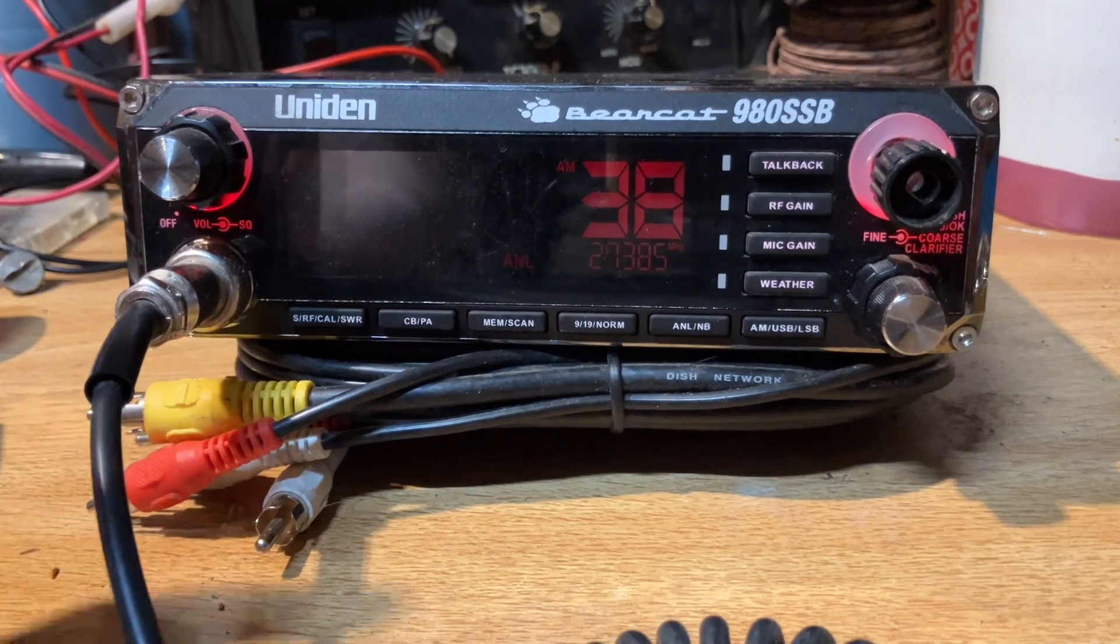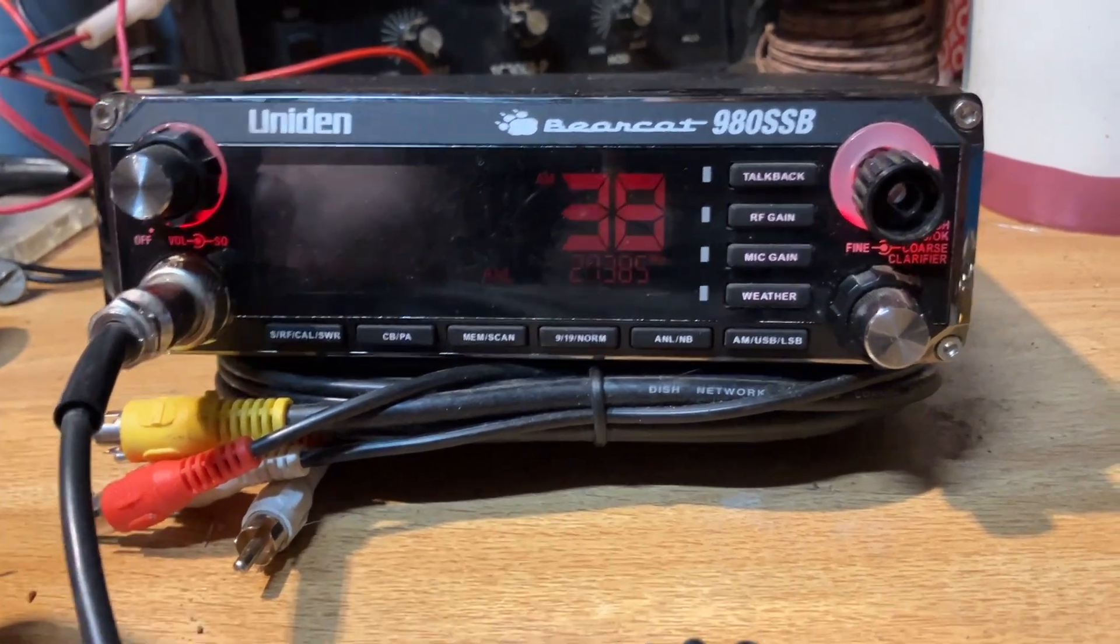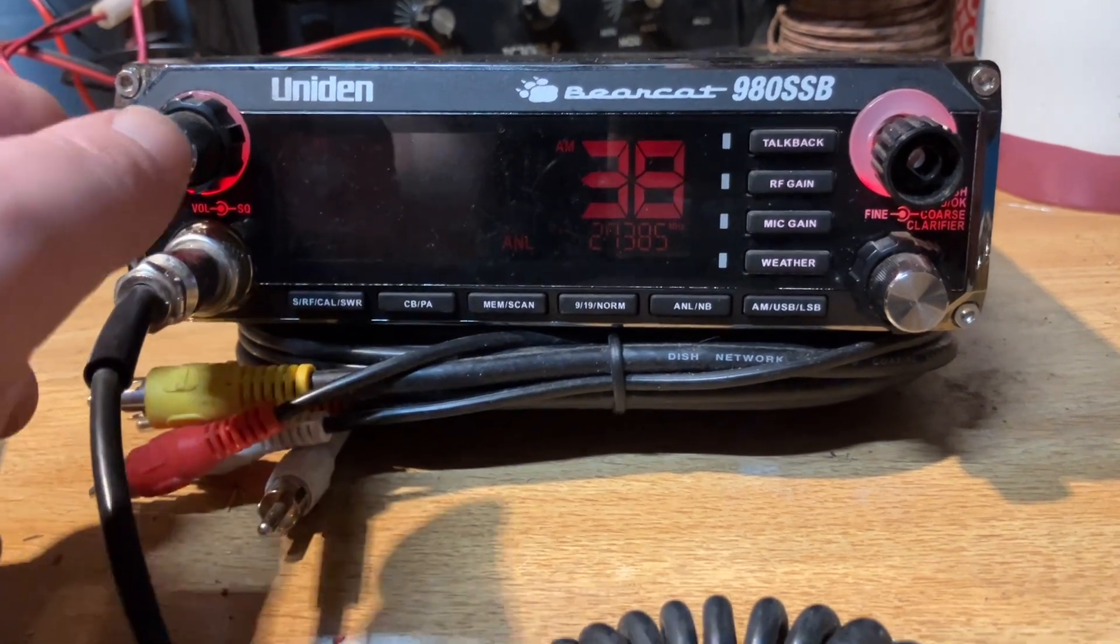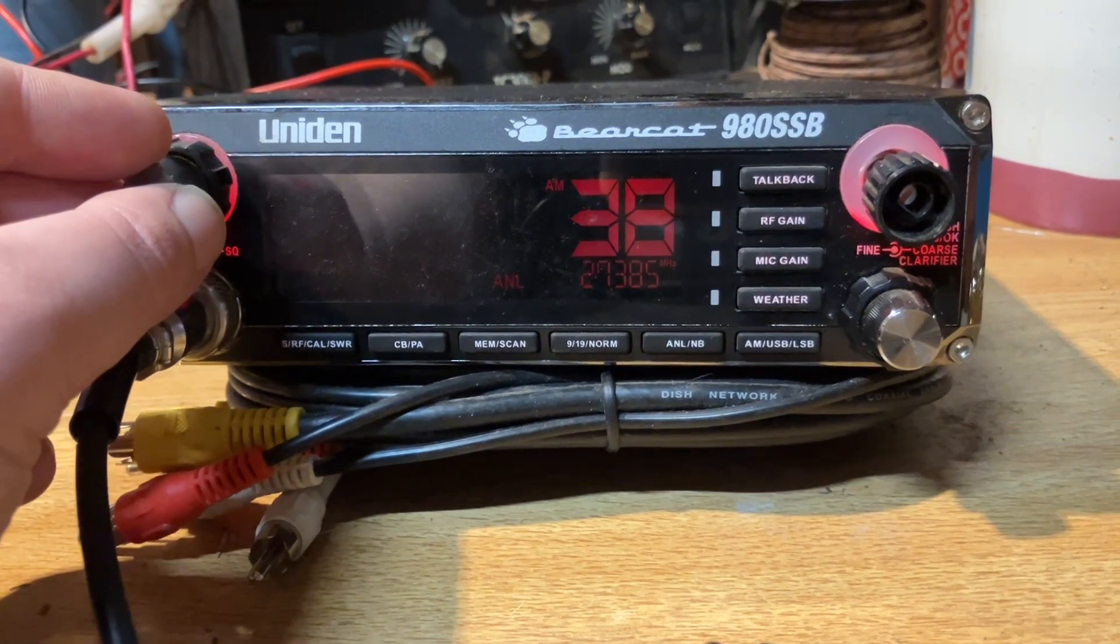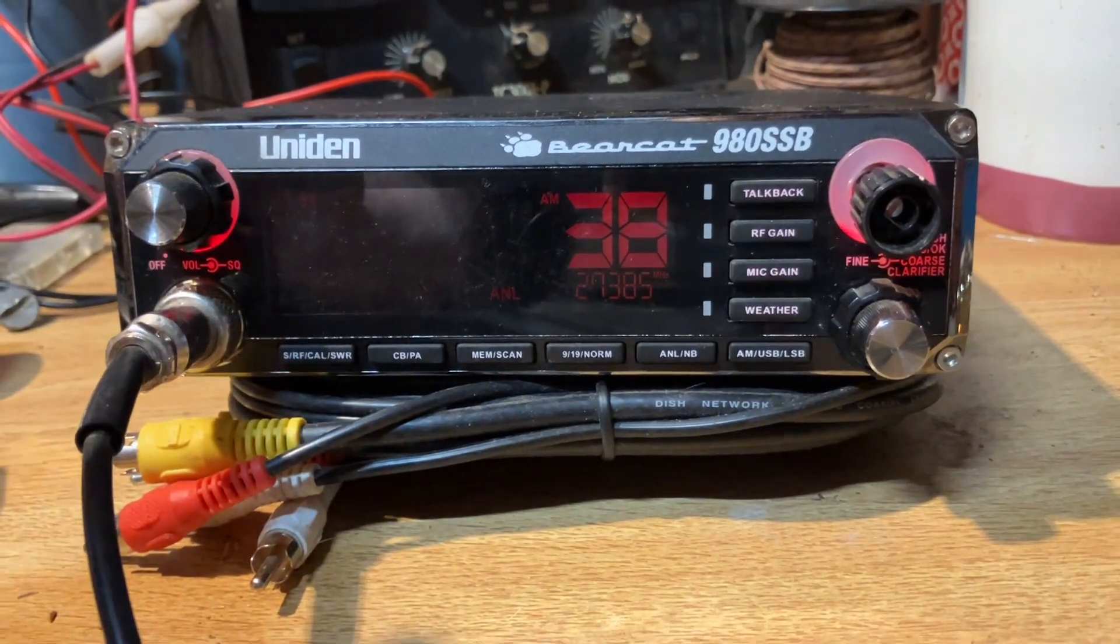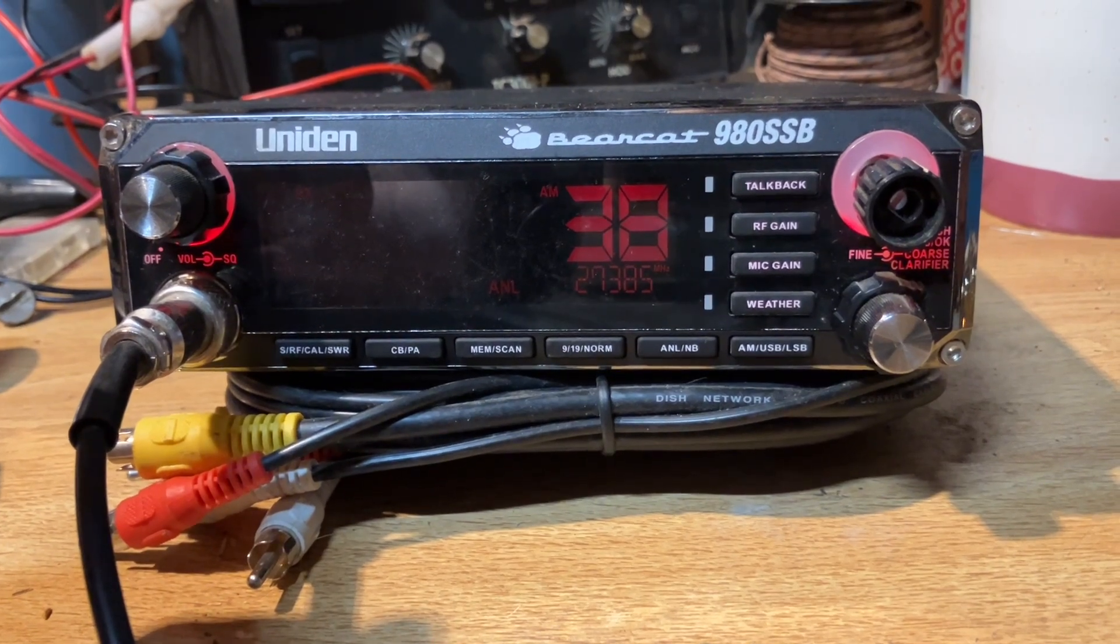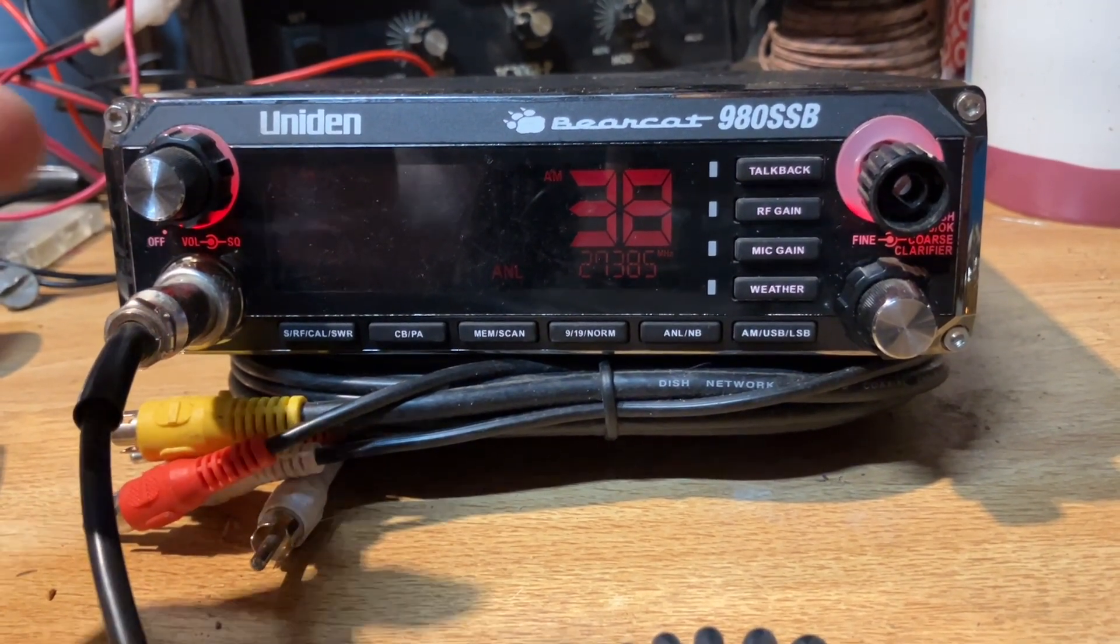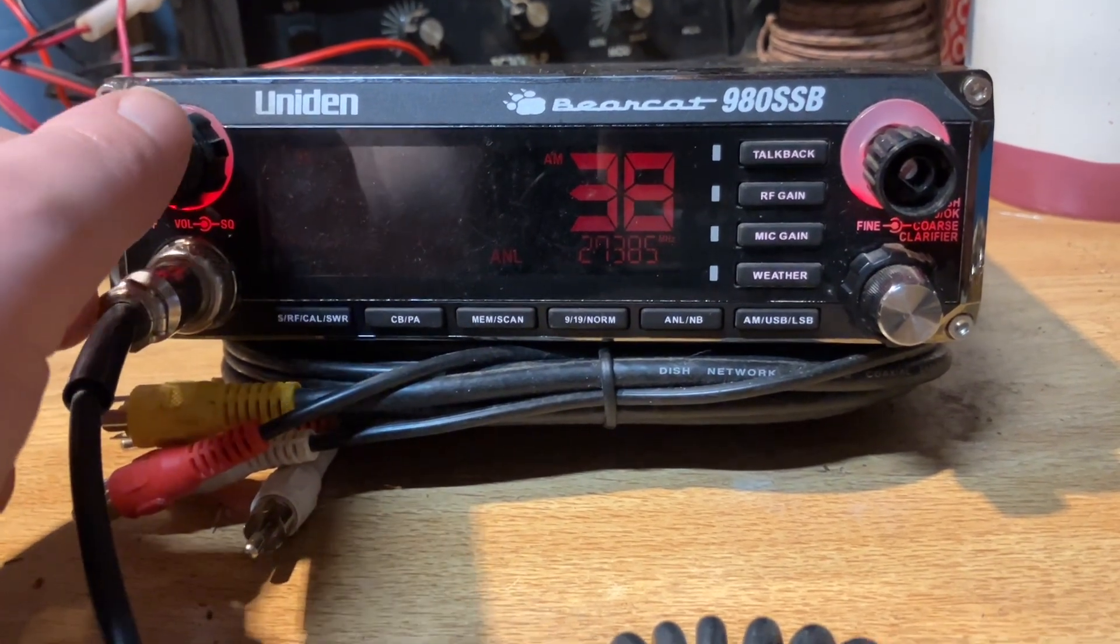So this is my Bearcat 980 SSB. It's a really cheap sideband radio but it works well enough. You'll notice I'm on channel 38 but I'm on AM, so you'll hear a lot of noise. You'll notice it sounds like aliens are talking in the background. What we're going to do is actually go to lower sideband. In fact, if you're ever on 38, 99.9% of the people on channel 38 are talking on lower sideband.